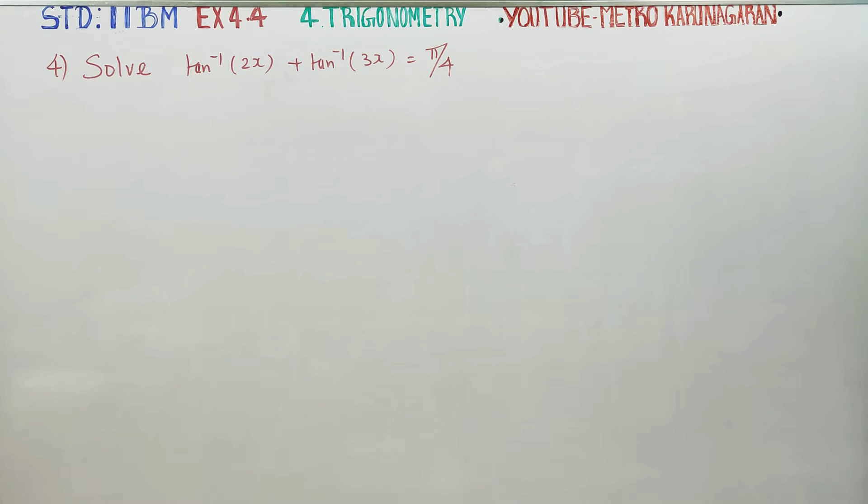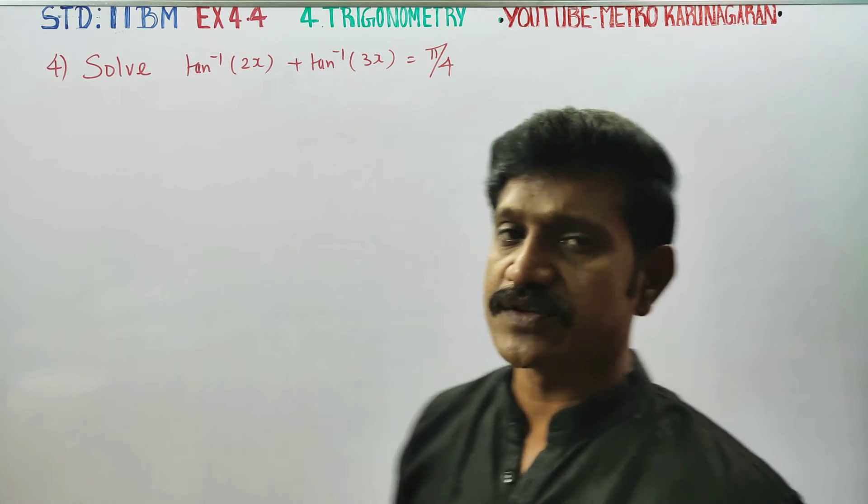Dear 11 standard business math students, I am Etro Karanagaran. Solve tan inverse of 2x plus tan inverse of 3x equals pi by 4.